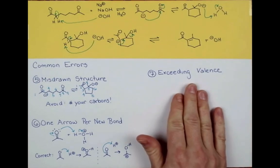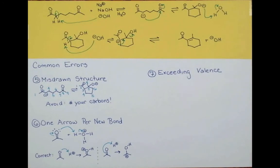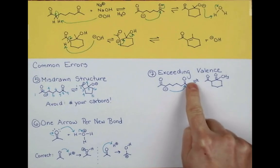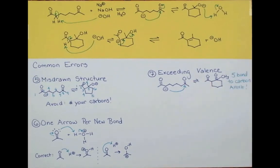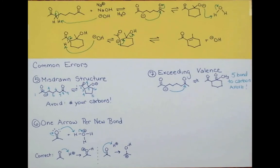Exceeding valence can be a big problem in mechanism writing, and if you exceed valence your mechanism will always be wrong. We want to follow the octet rule, so we want for the most part eight electrons around the common atoms in organic mechanisms. Let me show you how you might make this error. So if we look at this step here and we forget to draw our second arrow, we end up with this. Here we now have five bonds to carbon. This puts 10 electrons around it, exceeding the octet rule and exceeding the valence that carbon can have. So it's really important to check your structures for the proper valence.